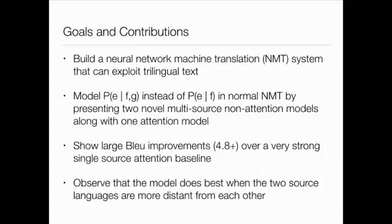Part 2: Multi-source neural machine translation, joint work with Kevin Knight at ISI. The goal: can we build a neural network machine translation system that exploits trilingual text? When building these systems you often have trilingual data. We present two novel multi-source non-attention models and one multi-source attention model. We show 4.8 BLEU point improvements over a very strong single-source attention baseline — currently state-of-the-art on many WMT benchmarks. We also observe that the model does much better when the two source languages are more distant from each other.